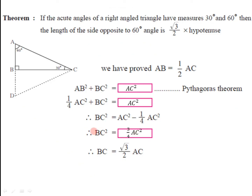Now if we take square root on both sides, we get BC is equal to root 3 divided by 2 into AC.